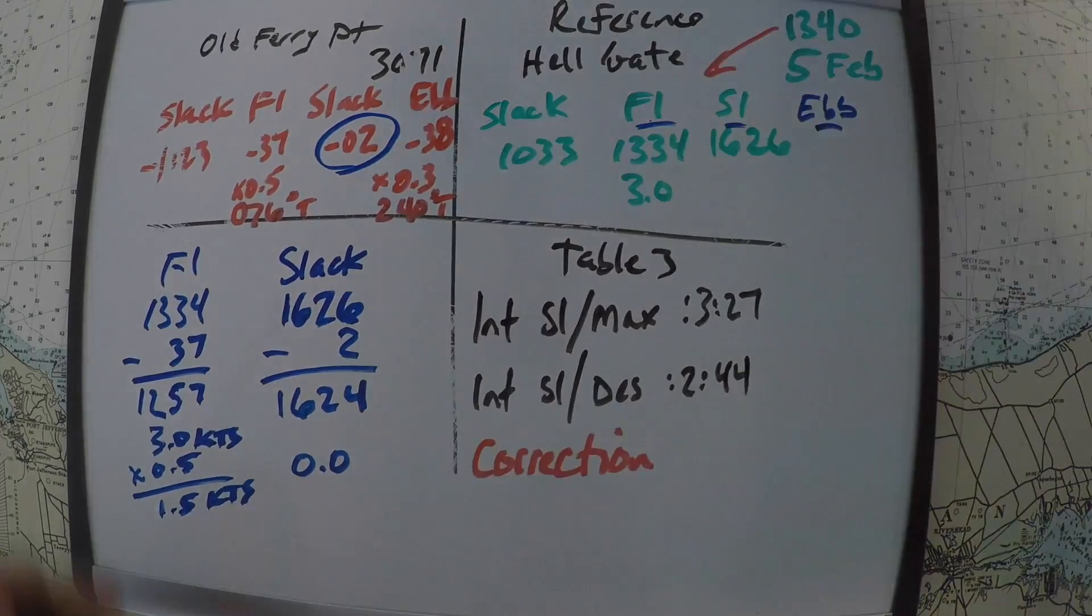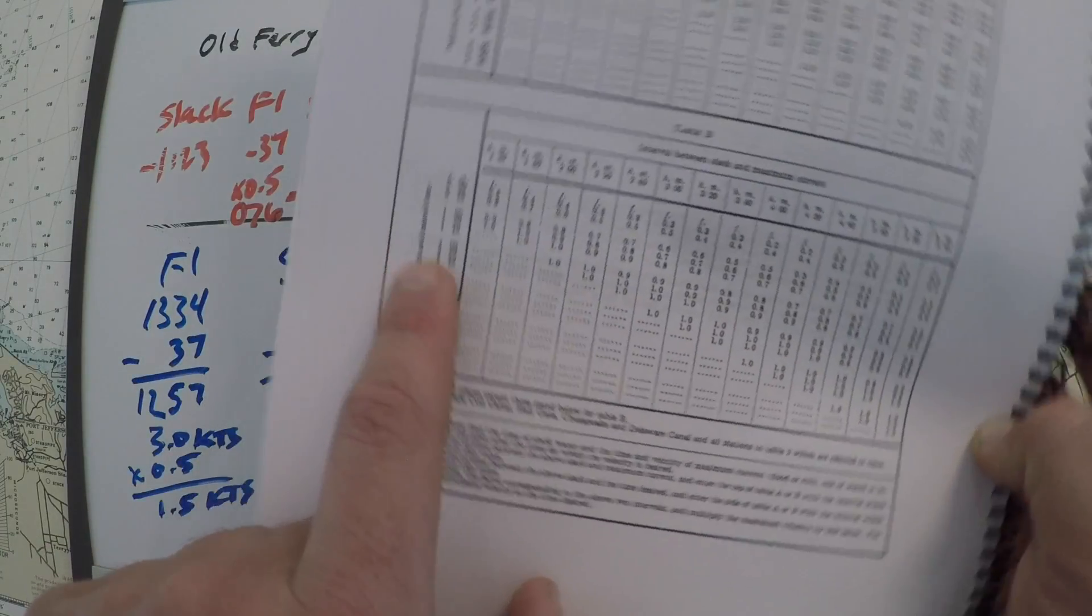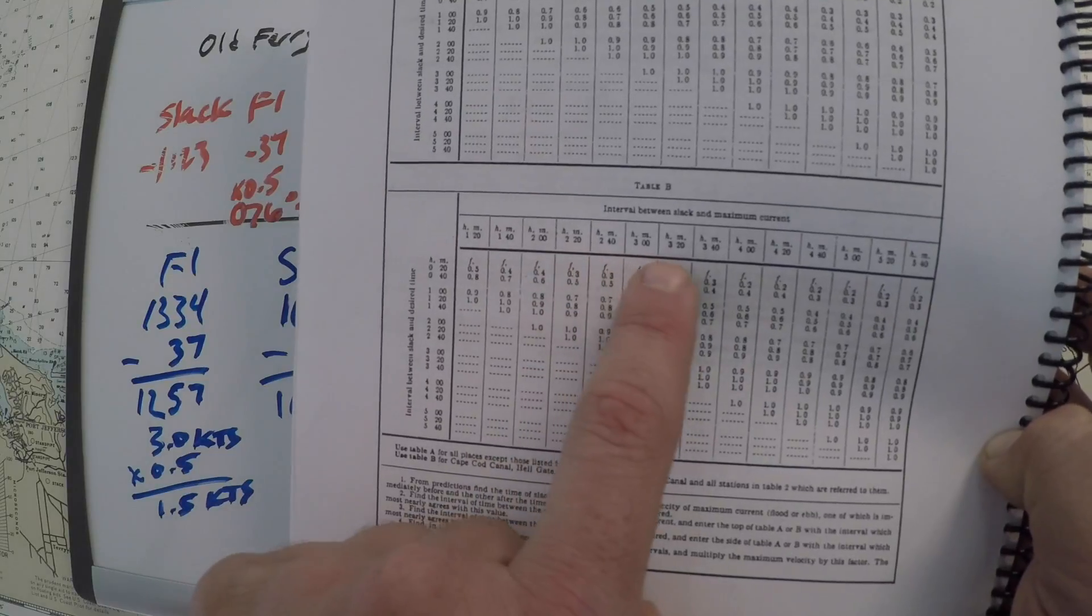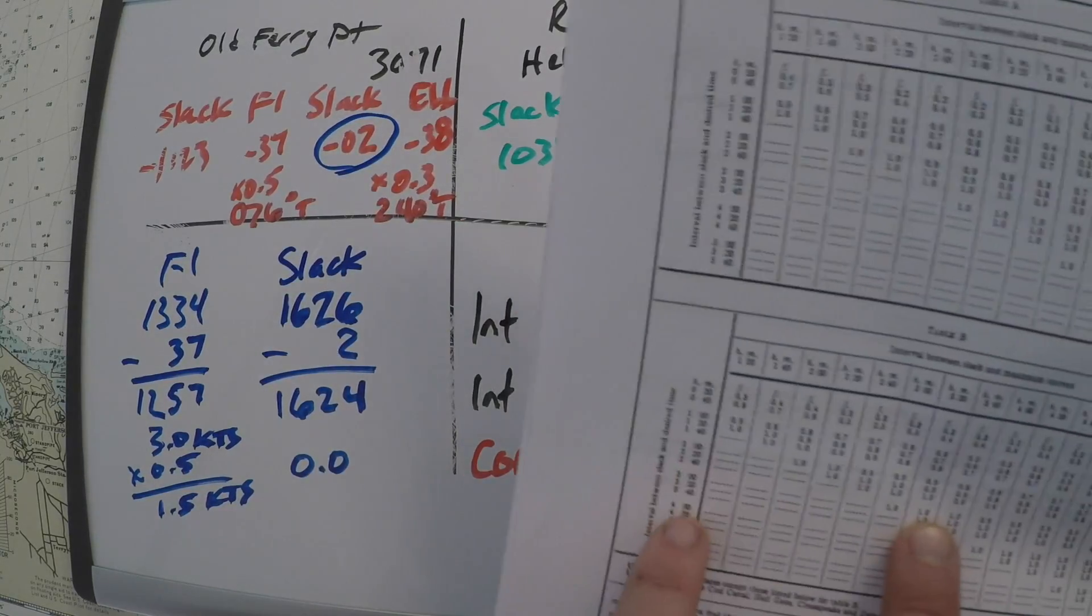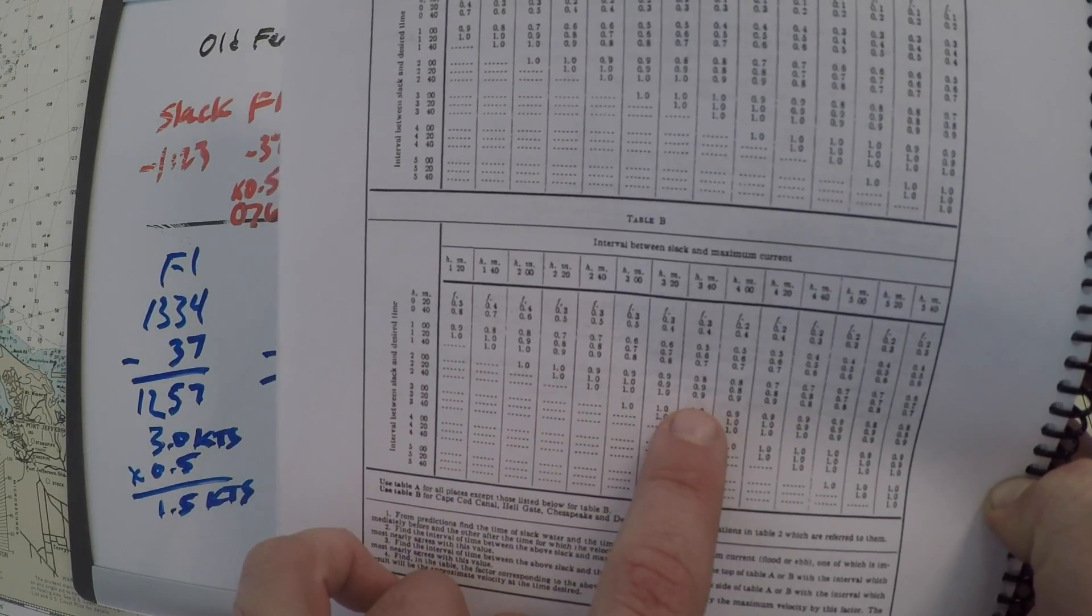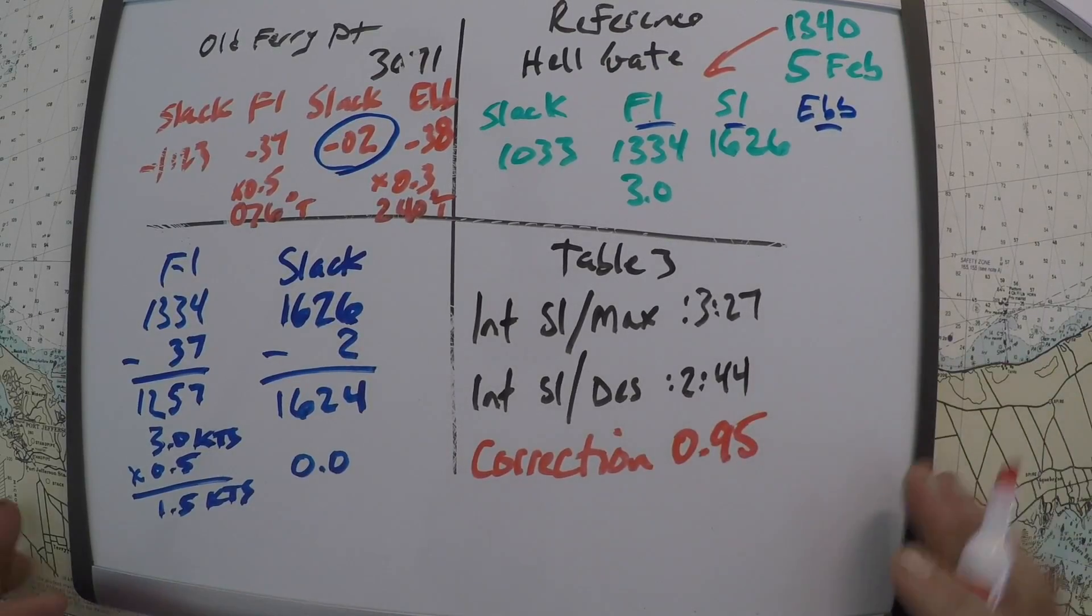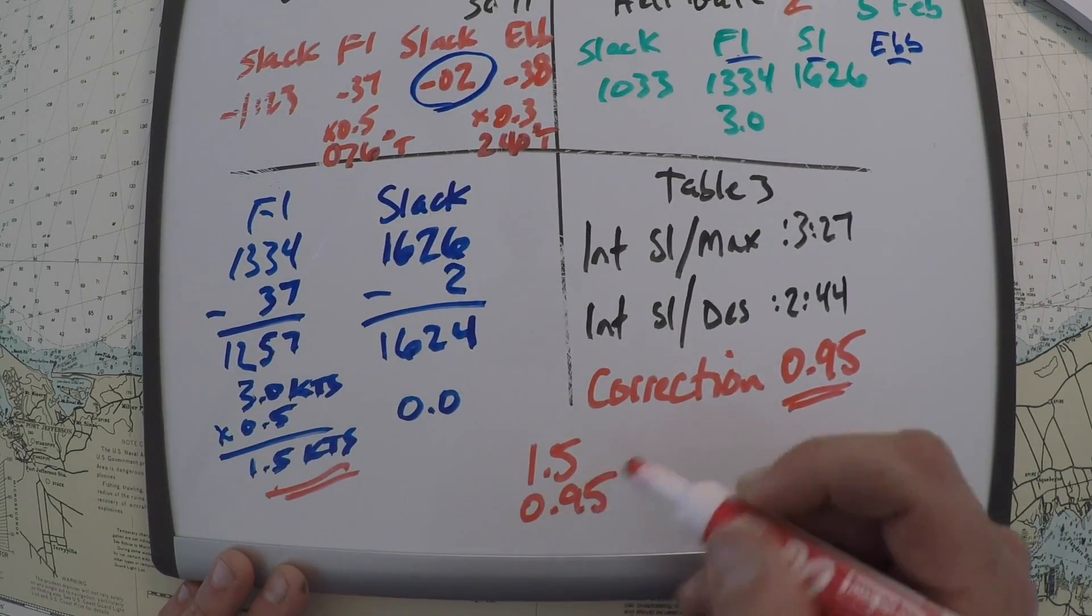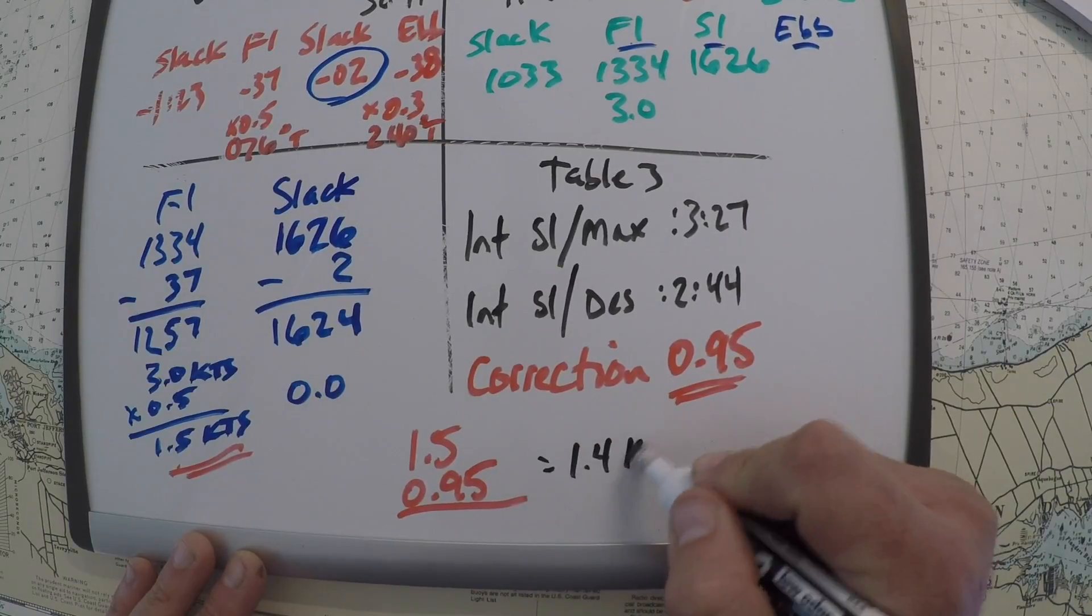So if you look back into table B on table 3, velocity of current at any time, interval between slack and max, interval between slack and desired, you can kind of come up with your correction. And so the slack and max was 327. So there's no kind of exact value in there. But we choose the closest value, 320. And then the interval between slack and desired was 244. So it looks like our correction is going to fall somewhere between 0.9 and 1.0. So if we just said it was a correction of 0.95, what we do is we take this correction and we apply it to the maximum current. So 1.5 times 0.95. If you do that out on the calculator, you end up with 1.4 knots as the final answer.